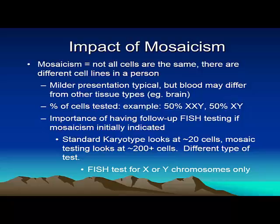Mosaicism means not all cells are the same, and there are different cell lines in an individual. The impact is typically that the presentation of the condition is milder. However, we test for these conditions by blood samples, and the blood may differ from other tissue types. We can't test all tissue types — for example, we can't test what the mosaic cell lines might be in the brain. We talk about mosaicism as a percentage or fraction of cells tested, such as 50-50 of two different conditions. It's important to have follow-up testing when you have a diagnosis of mosaicism. A standard karyotype looks at approximately 20 cells, whereas follow-up FISH testing looks at more than 200 cells, and we recommend FISH testing for X and Y chromosomes for these conditions.